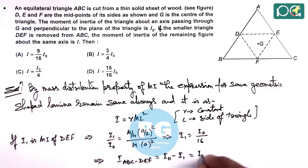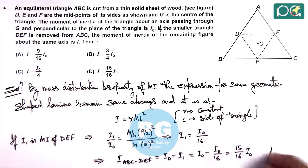This is giving us a value 15 by 16 I₀, which matches with option D. So our answer to this question will be option D.